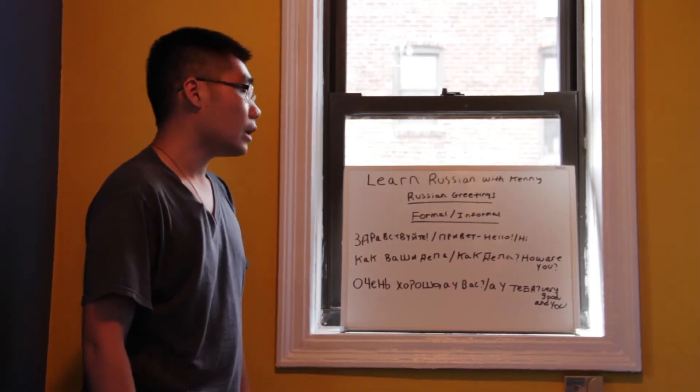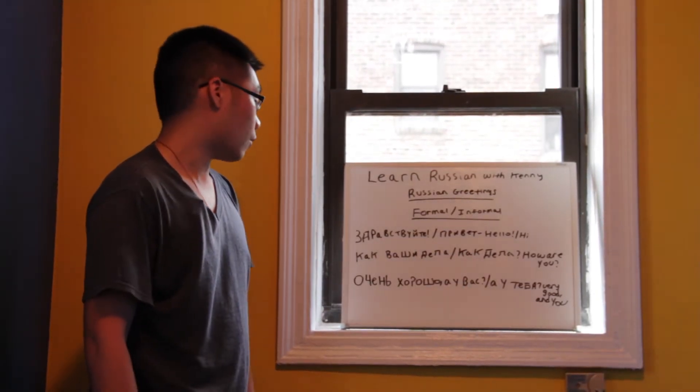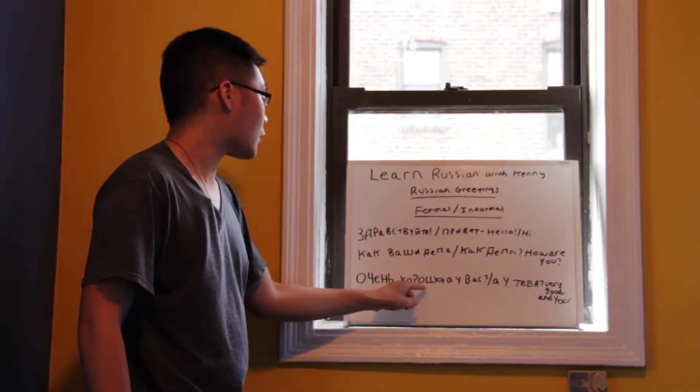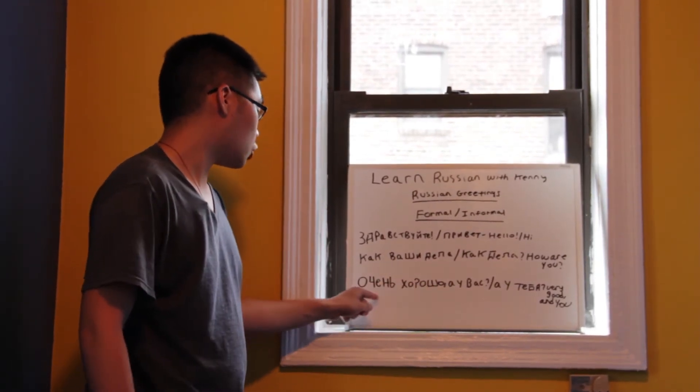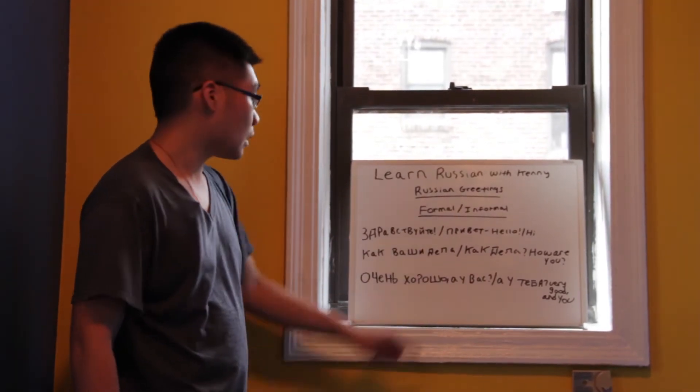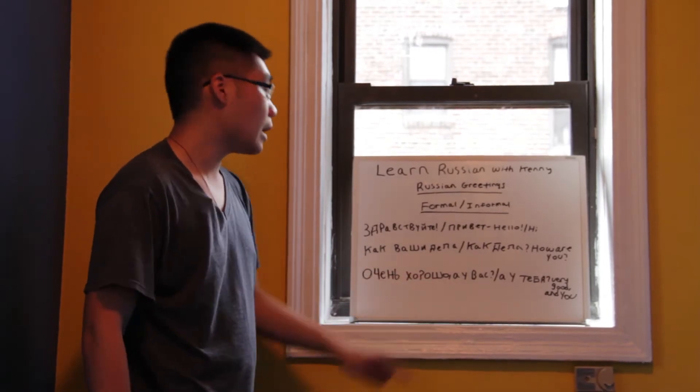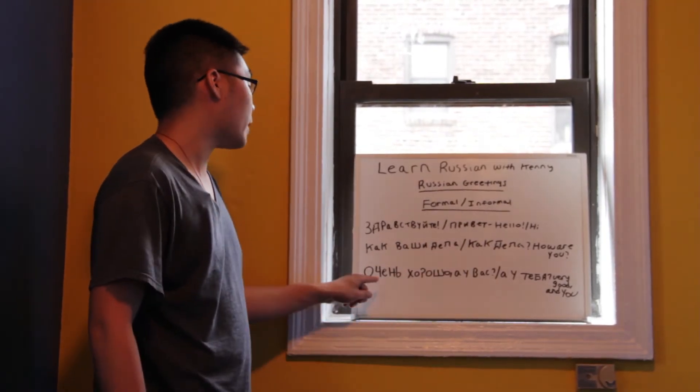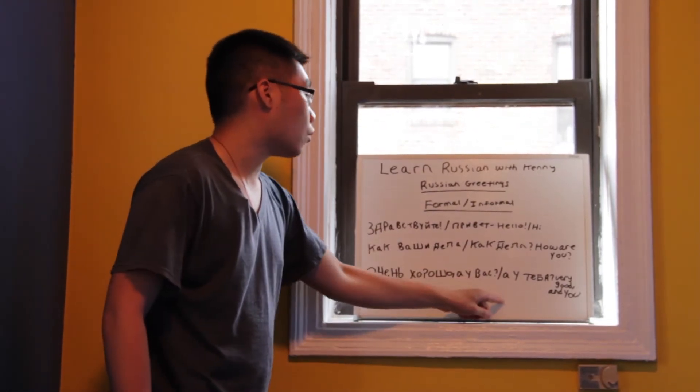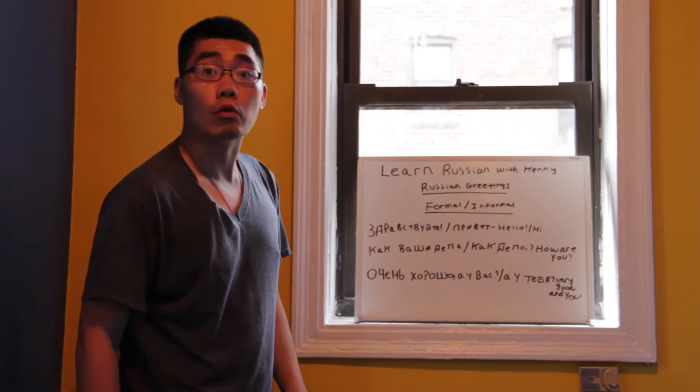In order to say you're good, in Russian, they would say очень хорошо. Очень хорошо. And you? Ау вас. Ау вас. Informally, it will still be очень хорошо. But you would say ау тебя. Ау тебя.